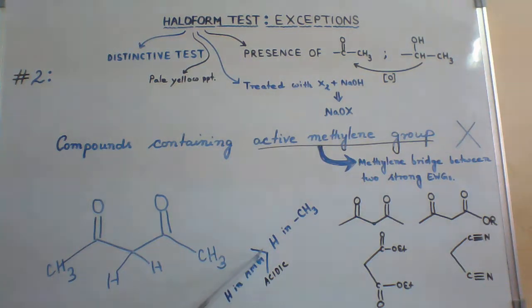Hydrogen in the active methylene group is more acidic as compared to hydrogen in the methyl group. Between methyl group hydrogen and hydrogen of the active methylene group, this hydrogen is more acidic.